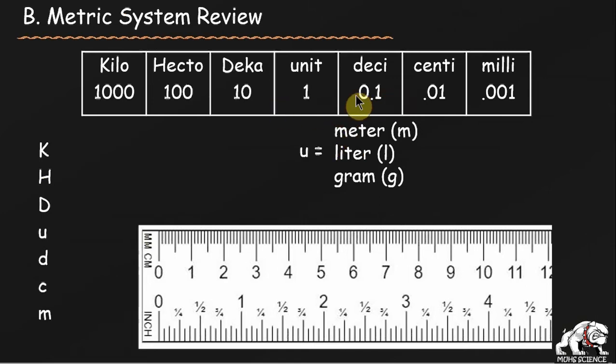Underneath each of these prefixes - deci, centi, milli - I've given their value. For instance, deca means you have ten of the base units, so a decameter is ten meters long. A hectometer is one hundred of the base unit, so if you have one hectometer, you have one hundred meters. And a kilometer means one thousand meters.